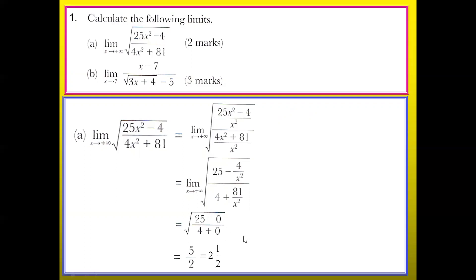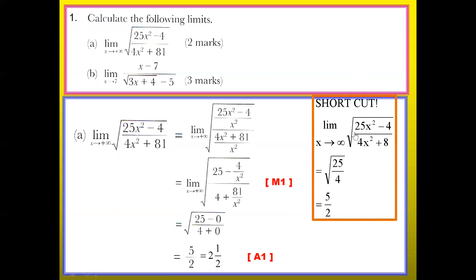You will get 2 marks: one half mark when you solve the denominator and numerator, and one when you calculate the correct answer. Now for these two marks, there's actually a shortcut for this question, but it can only be used when the numerator and denominator have the same degree. You take the constant in front of the highest power of the denominator and numerator — for this case 25 over 4 — and you will get the same answer.